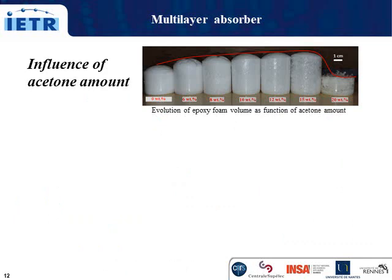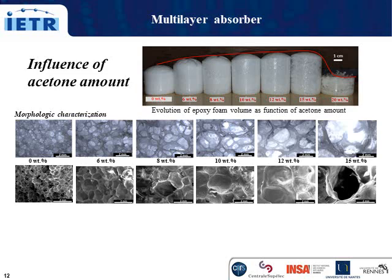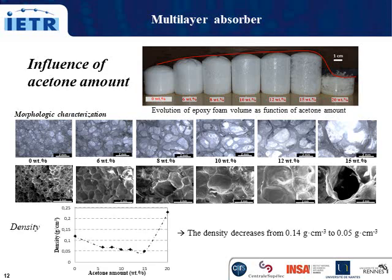Now, we will present the influence of the acetone amount left in the resin on the structure of the foams. We can see clearly on this photo that the volume of the epoxy foam increases when the amount of acetone increases to 15%. After that, the limit is reached at 20% of acetone. The optical and SEM images show that the size of pores of the epoxy foam increases when the amount of acetone increases. By varying the acetone amount, we succeed in reducing the density from 0.14 for epoxy without acetone to 0.05 by using 50% of acetone. After this amount, the density increases because the foam structure is altered.